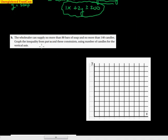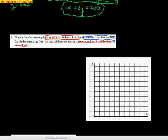Moving on — don't forget that inequality. It says the wholesaler can supply no more than 80 bars of soap and no more than 140 candles. Graph the inequality from part A and these constraints using the number of candles for the x-axis. No more than 80 bars of soap means y ≤ 80. No more than 140 candles means x ≤ 140. And our inequality from above is x + 2y ≥ 200. This is our system.